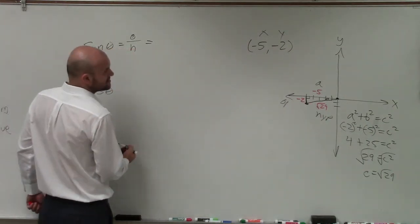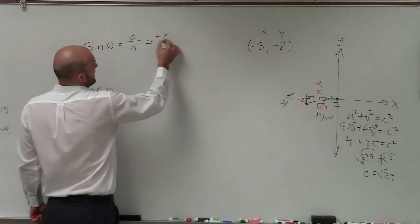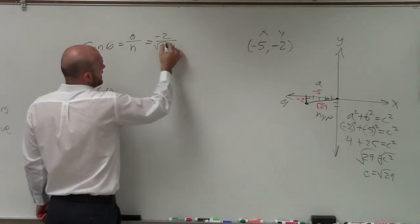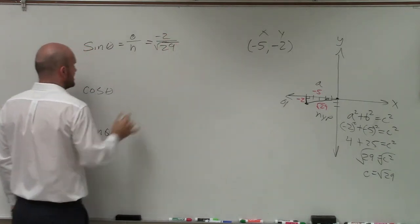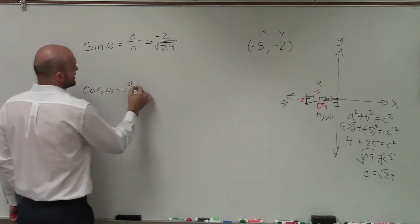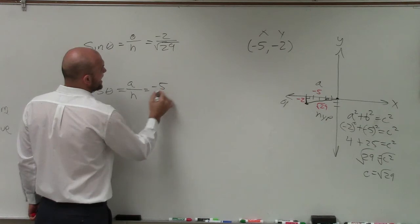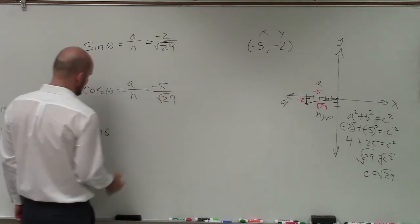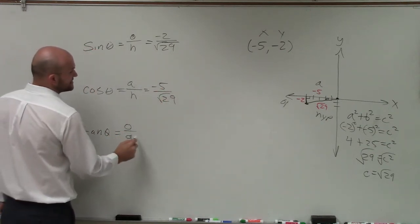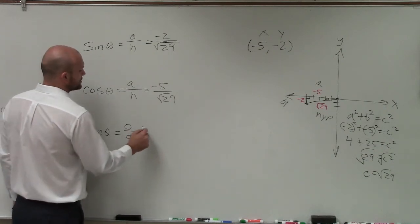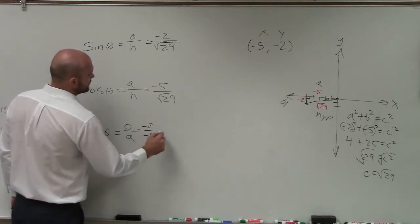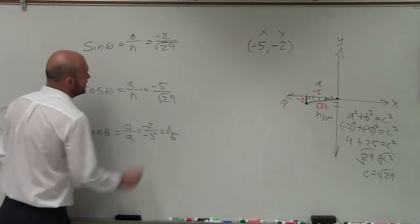So we have opposite over hypotenuse. So that's going to be negative 2 over the square root of 29. I'm going to get to the rest of that later. Cosine equals adjacent over hypotenuse. So that's going to be negative 5 over the square root of 29. And the tangent is going to be opposite over adjacent, which is going to be equal to negative 2 over negative 5, which is just equal to 2 fifths.